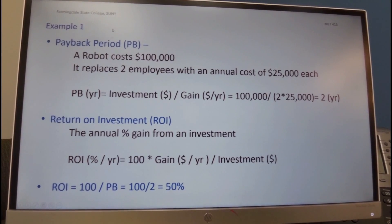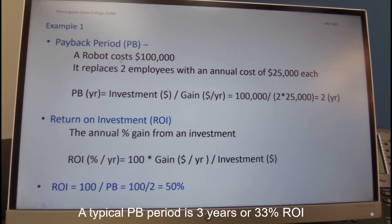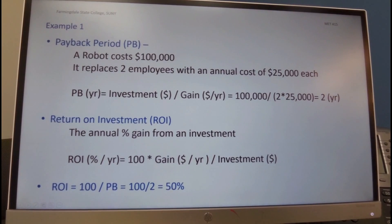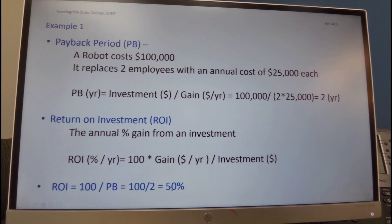Let's take a simple example. Suppose the robot costs $100,000 and it replaces two employees with an annual cost of $25,000 each. The payback in years is the investment of $100,000 divided by the gain of 2 × $25,000, which equals two years. The return on investment is 100 divided by the payback of 2, which is 50%.